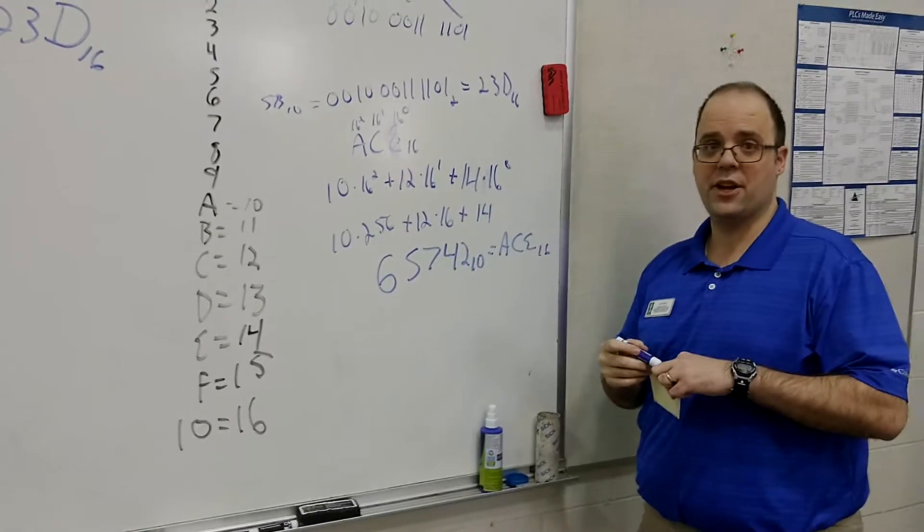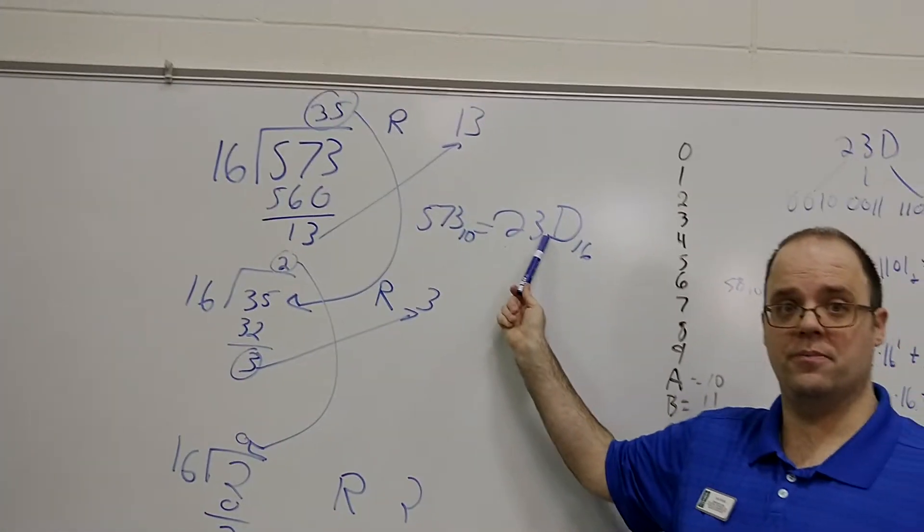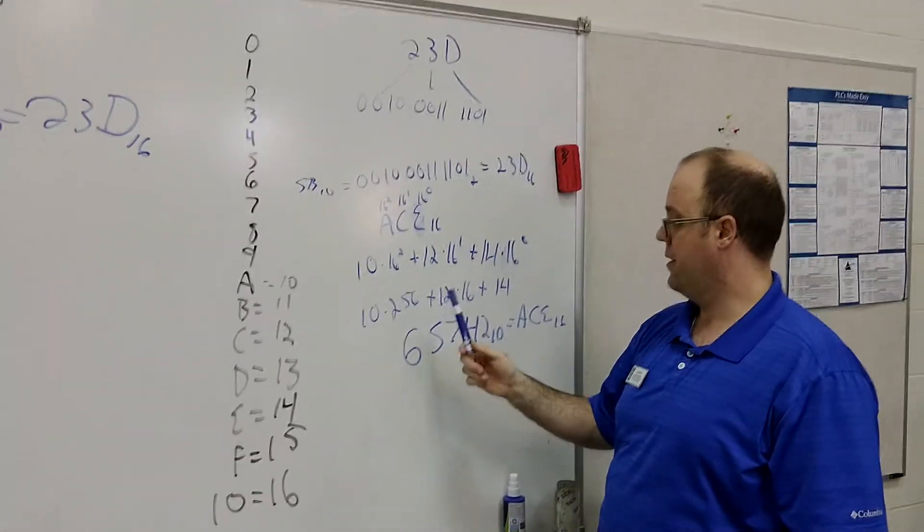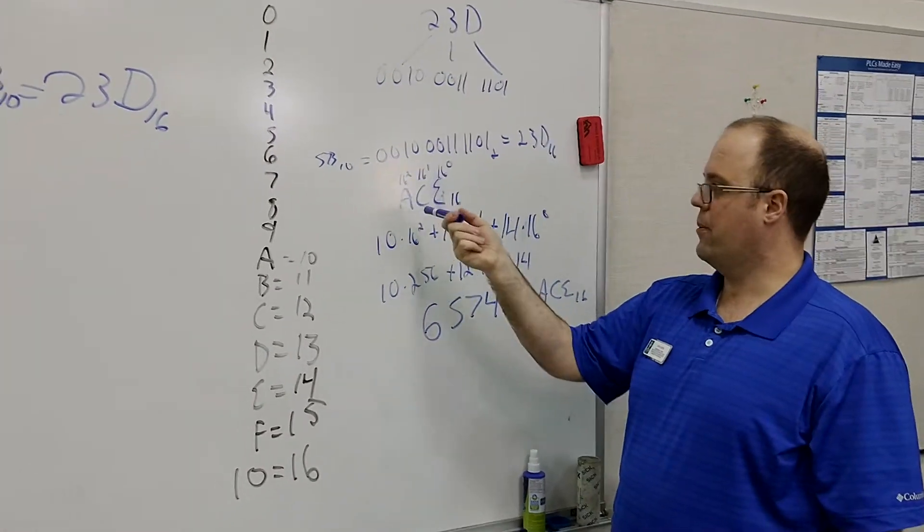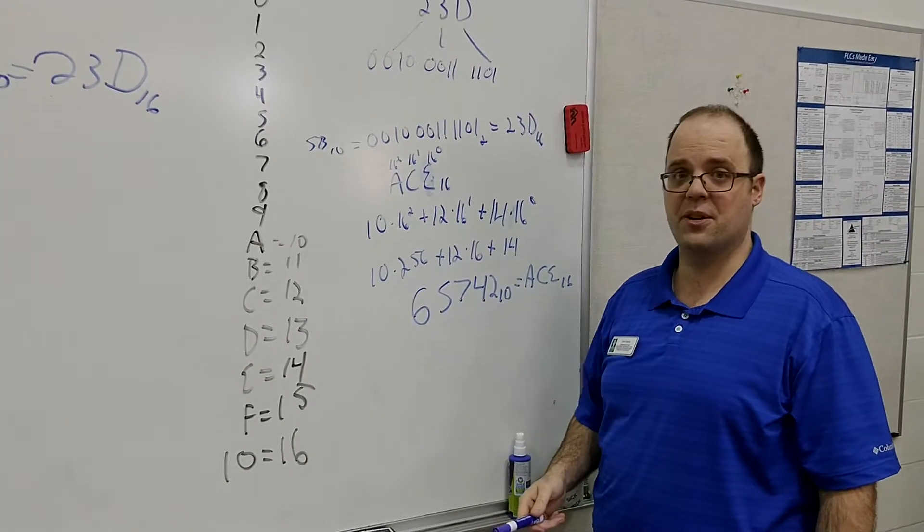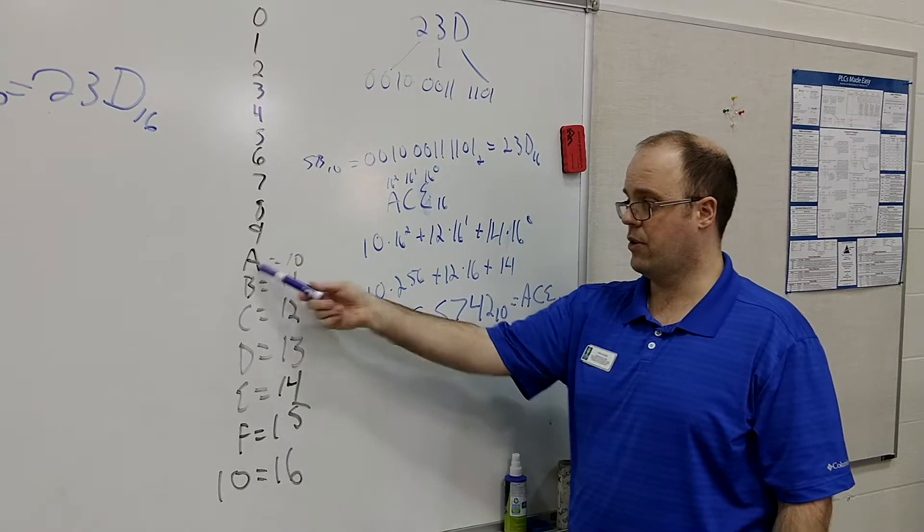So that's how you go from hexadecimal. This is how you go from decimal to hexadecimal, hexadecimal to binary, and then we go from hexadecimal to decimal base. And again, if I want to convert this into binary, just got to find the equivalent.